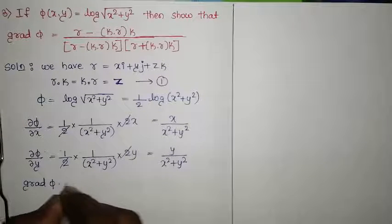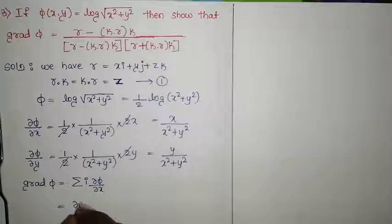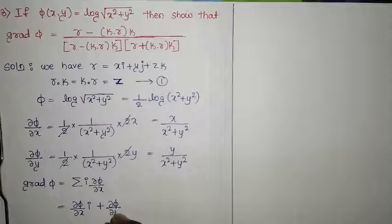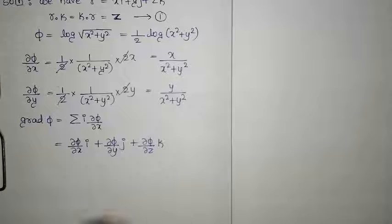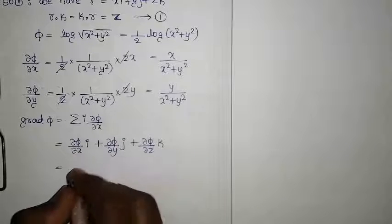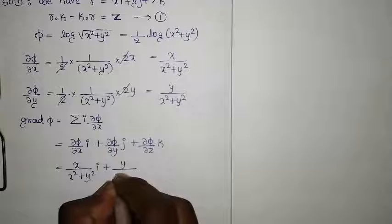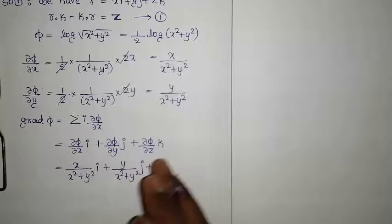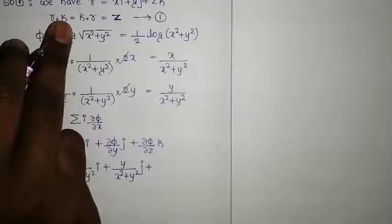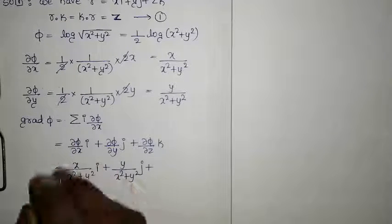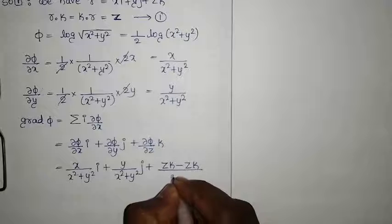The gradient ∇π = (∂π/∂x)i + (∂π/∂y)j + (∂π/∂z)k. Substituting: x/(x²+y²) · i + y/(x²+y²) · j. There is no z term in π, so we add and subtract zk in the numerator to adjust the denominator. This gives (xi + yj + zk − zk) / (x² + y²).